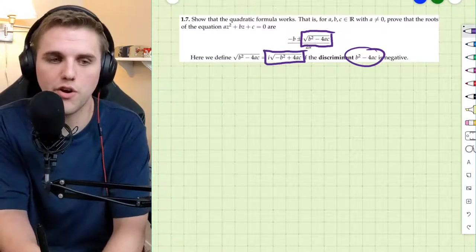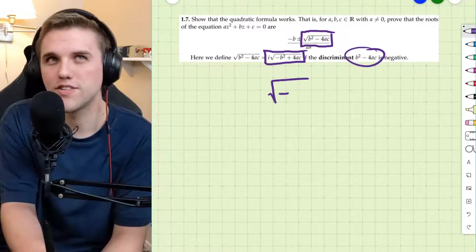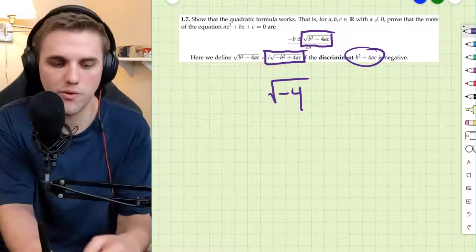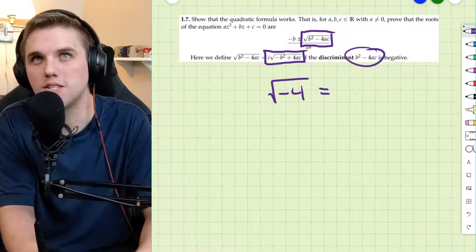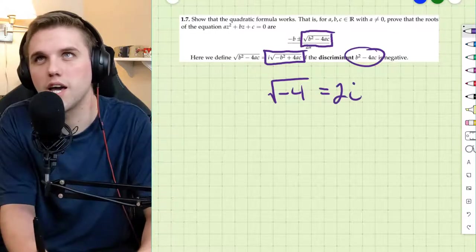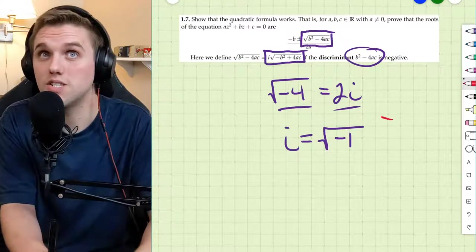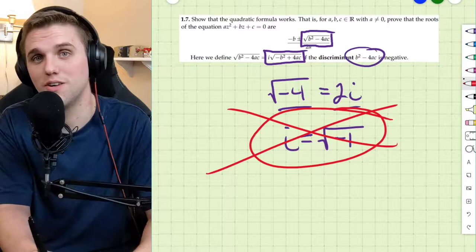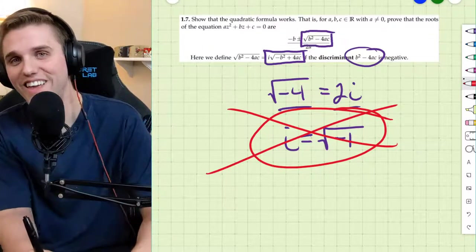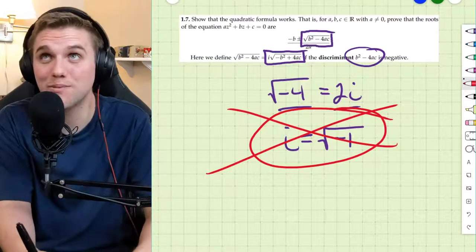Now, you might wonder, wait a minute. I thought whenever I have something like negative 4 and a square root, I thought I could just make this positive 2i. Can't I just do this? No. Please stop doing this. Don't ever say this. Because it's not true. That's not true at all. Just absolutely wrong.